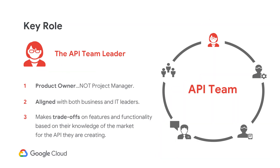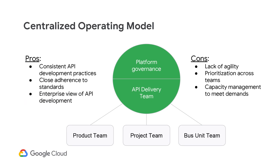As mentioned in the previous video around API team composition, it is essential to have an API team leader who is aligned with both the business and IT. This role is called the API product owner, and it is a key component to ensuring that the APIs built target a priority business outcome.